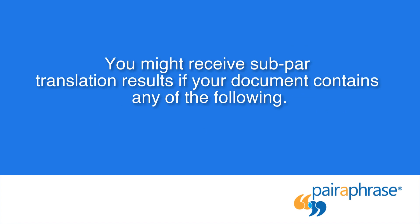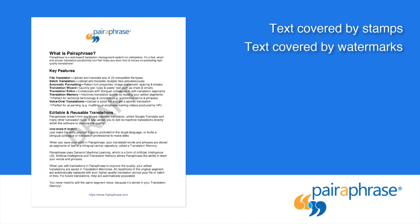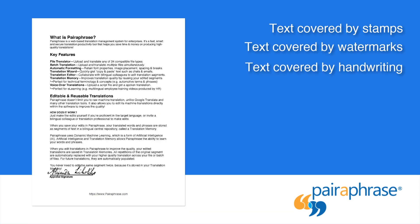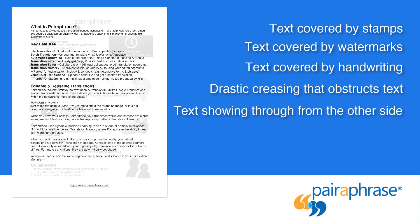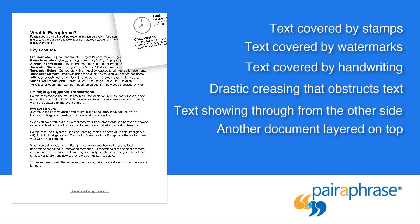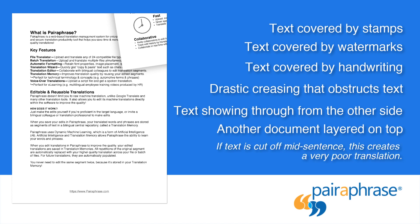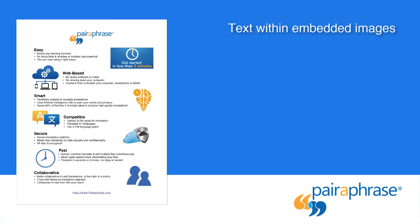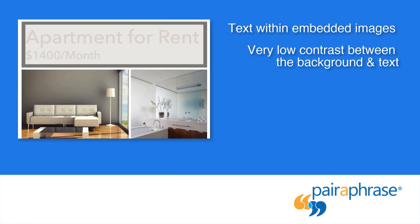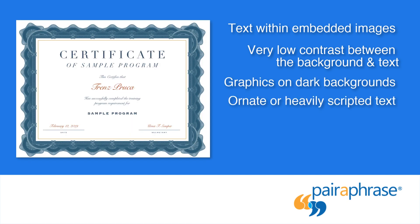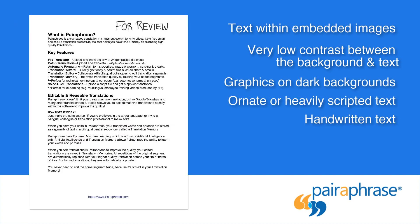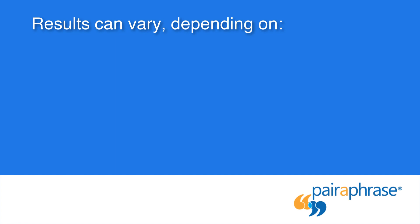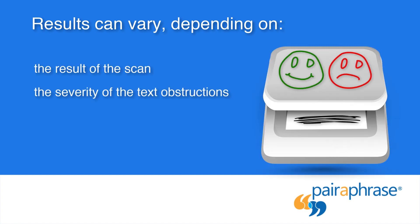You might receive subpar results if your scanned document contains any of the following: text covered by stamps, text covered by watermarks, text covered by handwriting, drastic creasing that obstructs your text, text showing through from the other side, another document layered on top of it, text cut off mid-sentence, text within embedded images, very low contrast between the background and text, graphics on dark backgrounds, ornate or heavily scripted text, and handwritten text, as OCR technology cannot yet accurately recognize it. Results can vary depending on the result of the scan and the severity of the text obstructions.